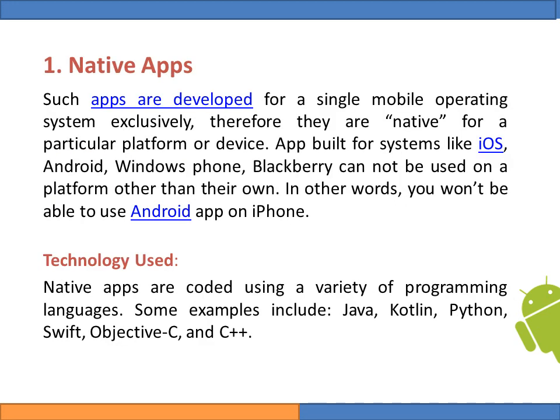The first type of mobile application is native applications. Such applications are developed for a single mobile operating system exclusively; they are native for a particular platform or device. Applications built for systems like iOS, Android, Windows Phone, and BlackBerry cannot be used on a platform other than their own. In other words, you won't be able to use an Android application on an iPhone device.